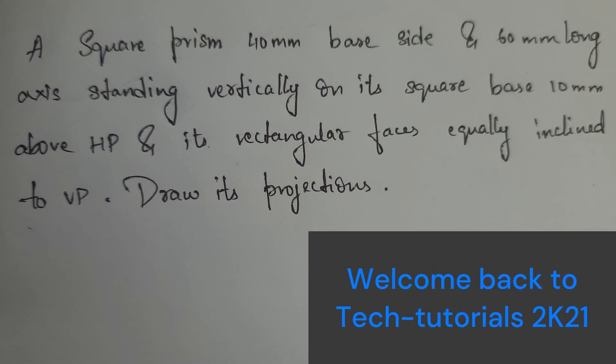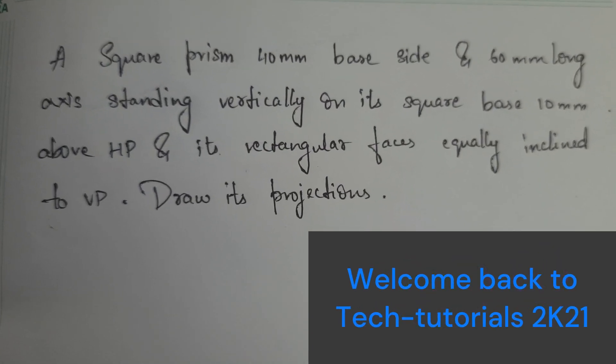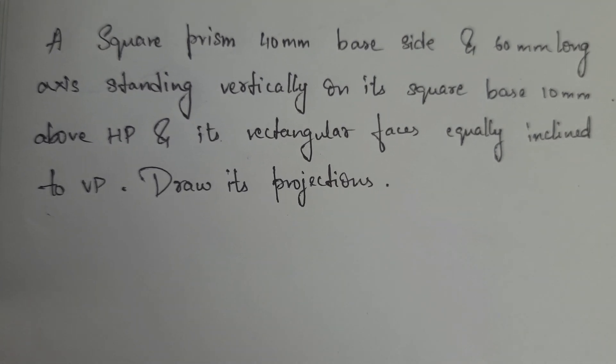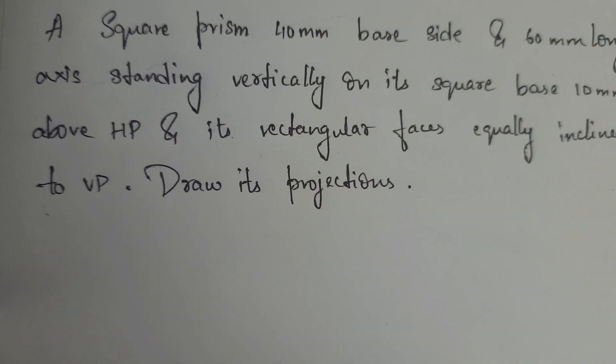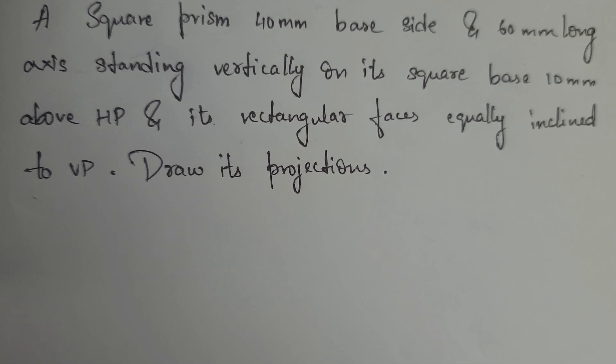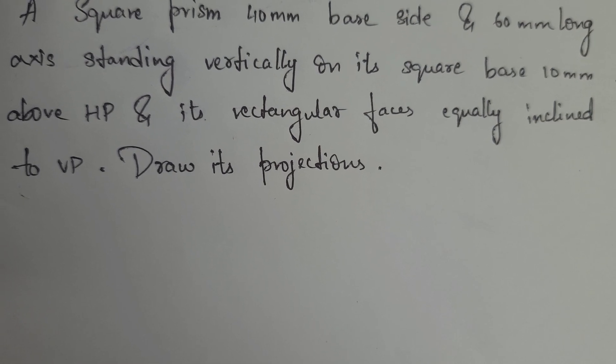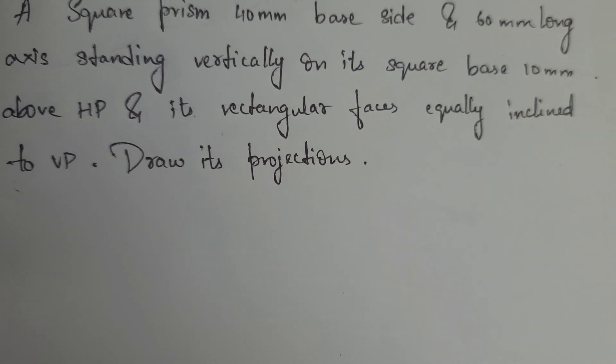Hello friends, so next question is, a square prism 40 mm base side and 60 mm long axis standing vertically on its square base, 10 mm above HP and its rectangular face is equally inclined to VP, draw its projections.